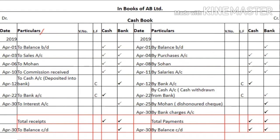If you are given some opening cash and bank balance, you will write it on the receipt side as 'balance brought down'. This concept was already discussed while preparing the single column cash book. Opening cash balance is written in the cash column and opening bank balance in the bank column. If there is a credit balance — that is, a bank overdraft — you write 'by balance brought down' with the amount in the bank column.